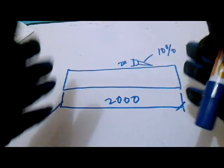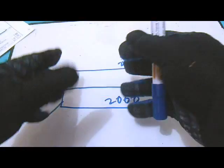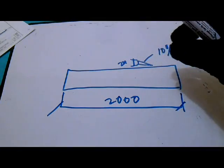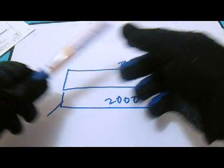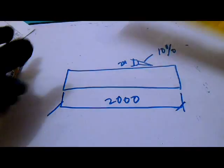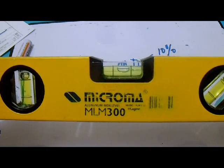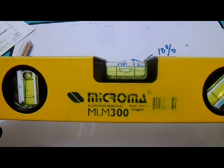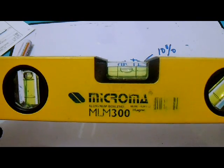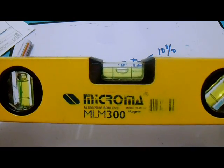This slope you will not see from this pipe because it's very small. Just make it level. If you see this spirit level, this level is level and this slope we will not see because only small.